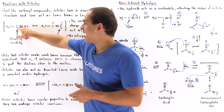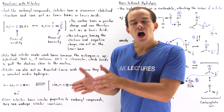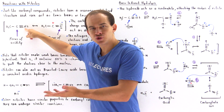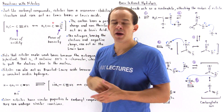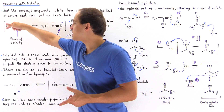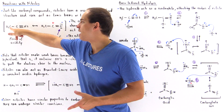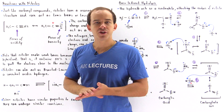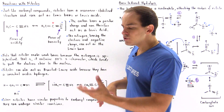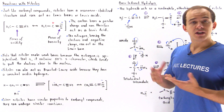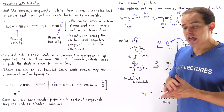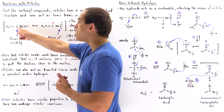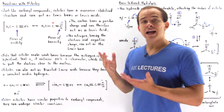Basically, we have a carbon at the center. On one side, we have a triple bond with a nitrogen that contains a lone pair of electrons. To the other side of the carbon, we have a single bond between a carbon and a carbon, so we have a methyl group. Now, nitrogen is more electronegative than carbon, so it will pull the electron density away from the carbon and towards our nitrogen.